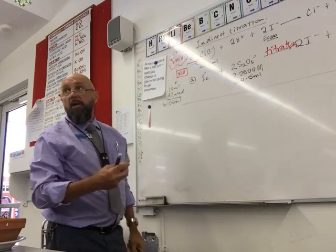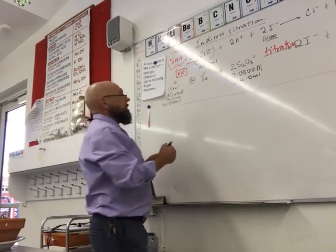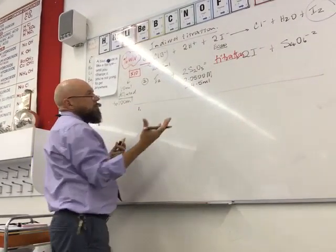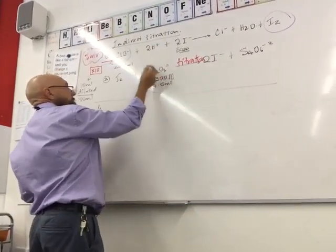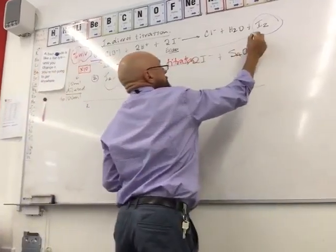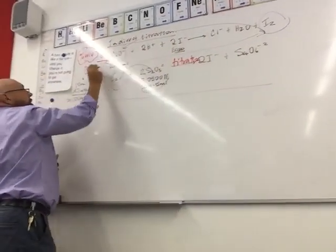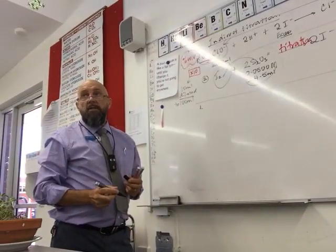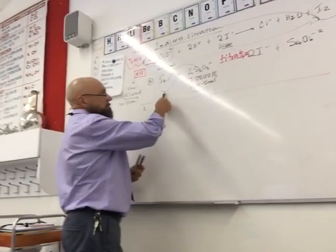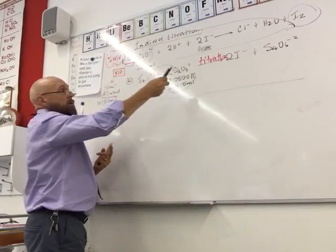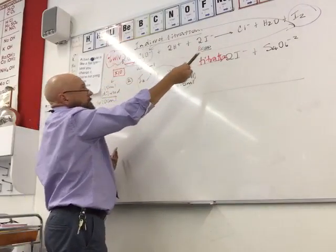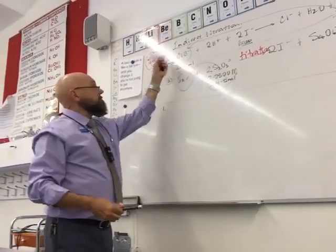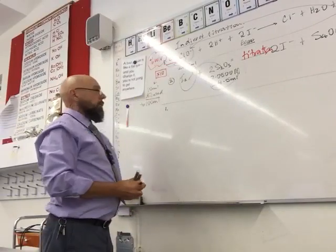We always start with the titration step. We're going to start at equation two. The process always goes: titration step → work out concentration or moles of a reagent or product in equation one → use that to work out moles of the target compound → then do your final calculation to get concentration or percent weight by volume. It's always the same.